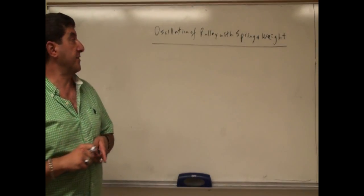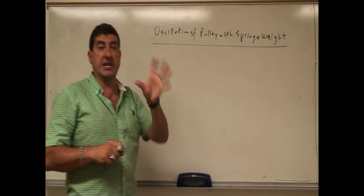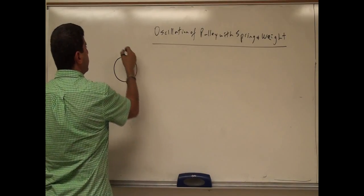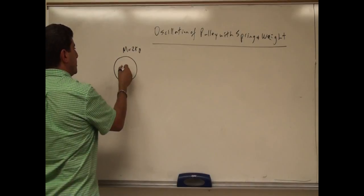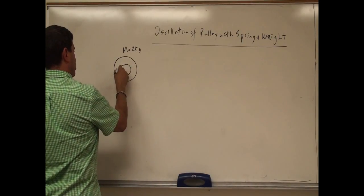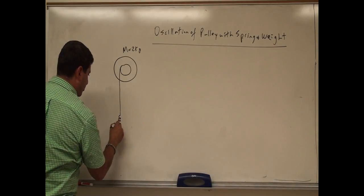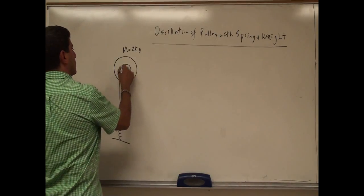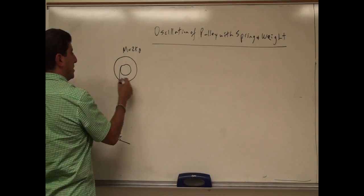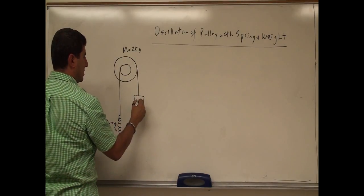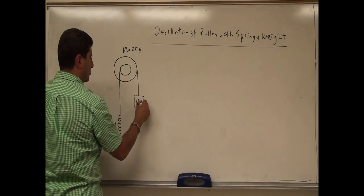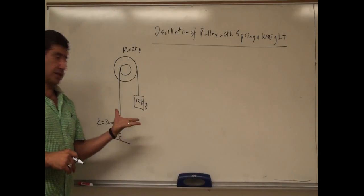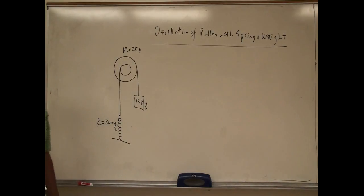Now I'm going to do a problem on the period of oscillations of a pulley with a spring and a weight. I'm going to do a general problem where I have a pulley with a 2 kilogram mass, another axle on it, a string connected to a spring with a spring constant of 200 newtons per meter. Then on the end of the pulley I have another string with a weight of 10 kilograms. I'm going to pull on this weight and let go, and then the system is going to oscillate. So what is the period of oscillation?